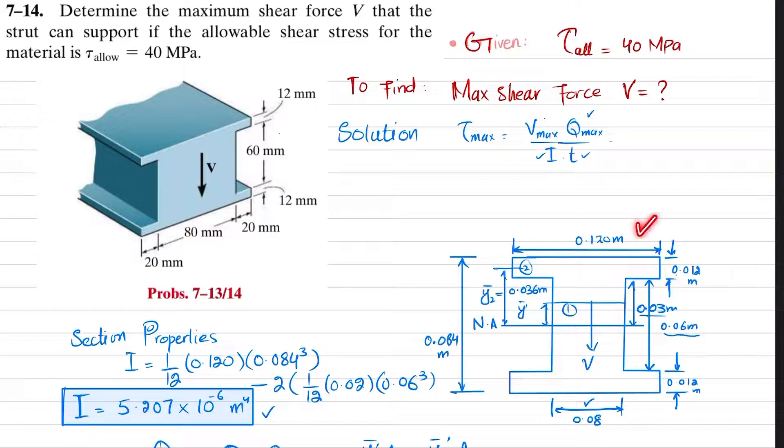I have drawn the cross-section of this strut. The width is 0.120 meters, and the total height is 0.084 meters. If I draw the neutral axis, it passes through the center, so 60 divided by 2 gives a distance equal to 0.03 meters.